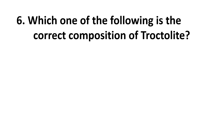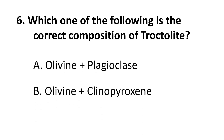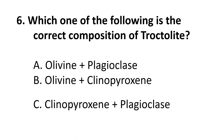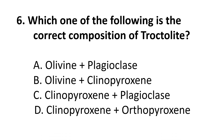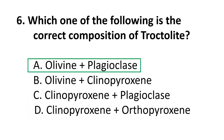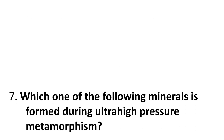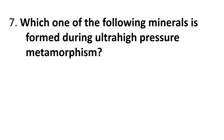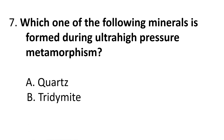Question 6: Which one of the following is the correct composition of troctolite? Choices are: Olivine + Plagioclase, Olivine + Clinopyroxene, Clinopyroxene + Plagioclase, Clinopyroxene + Orthopyroxene. The correct answer is A) Olivine + Plagioclase.